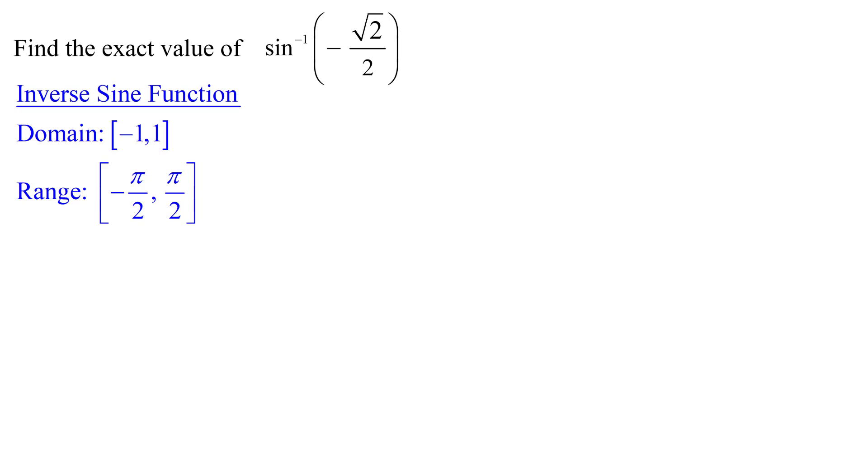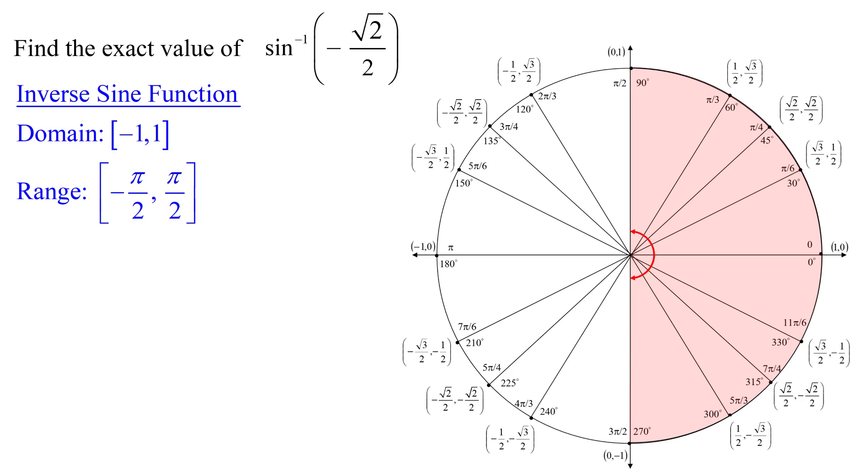So what this means is I'm looking for angles somewhere in this shaded region on my unit circle. So I could have a positive angle rotating between 0 and pi over 2, or a negative angle rotating between 0 and negative pi over 2.